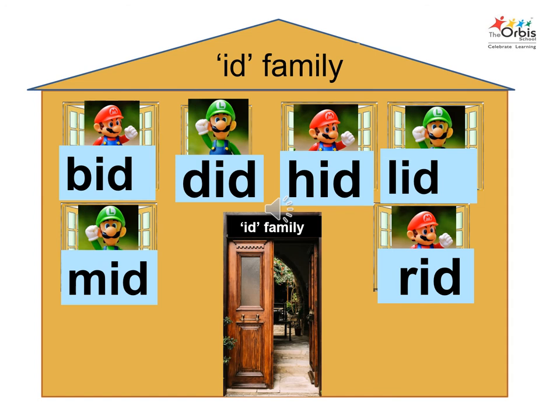Say hello to Bid. The second family member is Did. Say hello to Did. The third family member is Hid. Say hello to Hid. The fourth family member is Lid. Say hello to Lid. The fifth family member is Mid. Say hello to Mid. The sixth family member is Rid. Say hello to Rid.